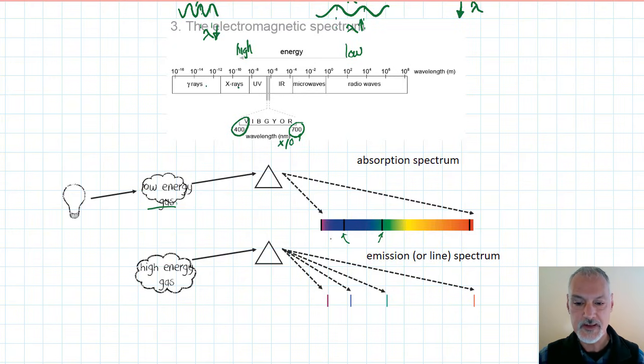One of the things you should note about these spectra is they complement each other. What I mean by that is a band that is missing in my absorption spectrum is exactly the same as the band that's emitted in the emission spectrum, provided I had the same gas.